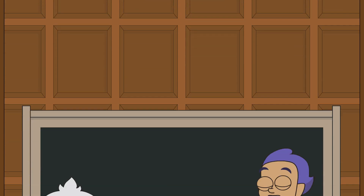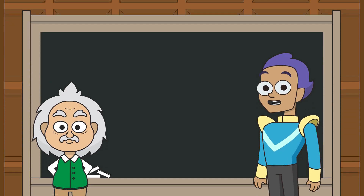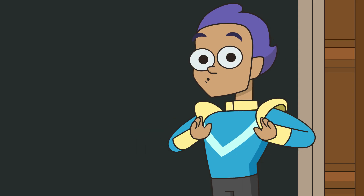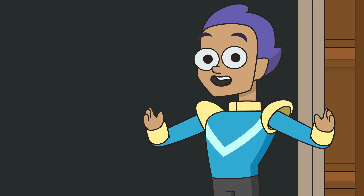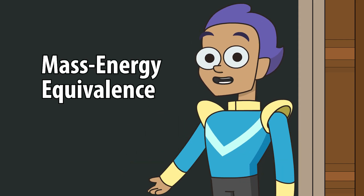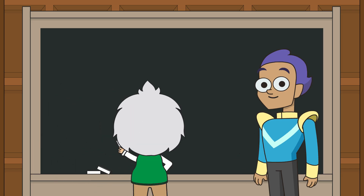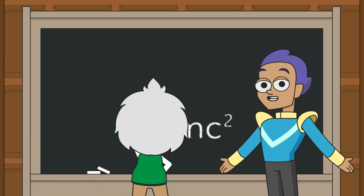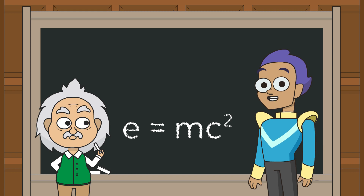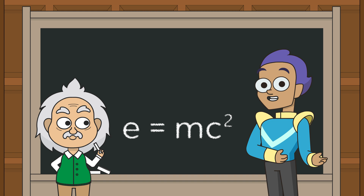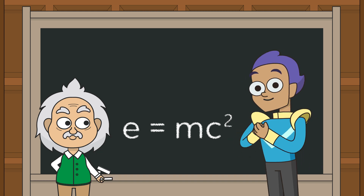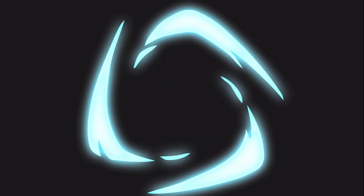In 1905, following his paper on the special theory of relativity, Albert Einstein proposed what he called the Law of Equivalence of Mass and Energy, or Mass-Energy Equivalence for short. From that paper came the most famous equation in all of physics: E equals mc squared. It describes the relationship between energy and mass. But what does it actually mean? We're going to break it down, today on Tinyverse.